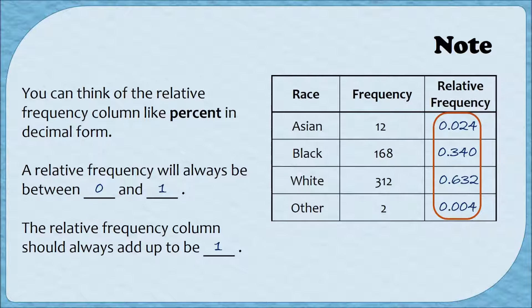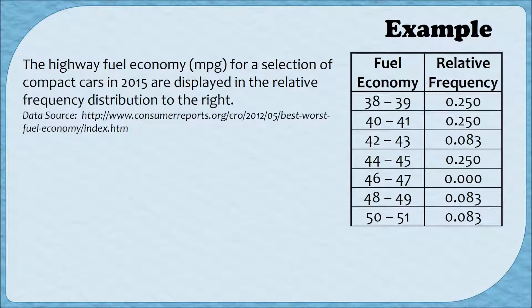Now let's do an example of interpreting a relative frequency distribution. We're given the highway fuel economy for a selection of compact cars in 2015. This distribution differs from the previous one in two ways: that example used qualitative data, while this one uses grouped quantitative data. Also, this relative frequency distribution doesn't have the middle column showing raw frequencies — when given a relative frequency distribution, you may or may not have that frequency column.